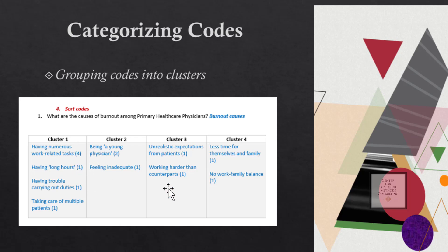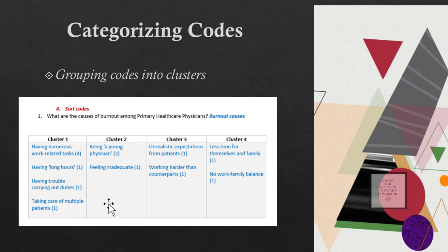The next step is to label the clusters. The label should reflect the cluster members — the codes that are under each cluster. We will talk about that in detail in our next lesson. I hope you are clear on how to group codes into various clusters.